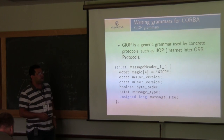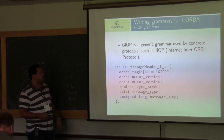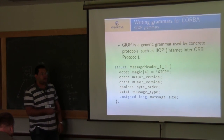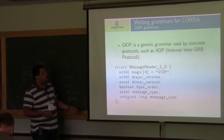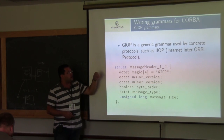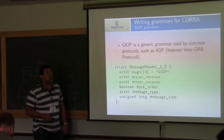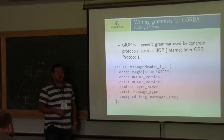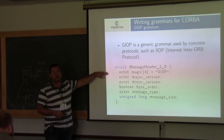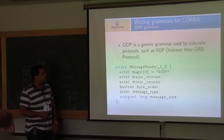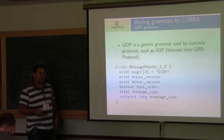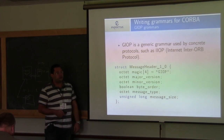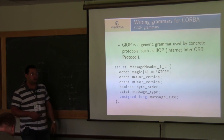GIOP is actually a generic grammar — it doesn't specify directly how an octet is laid out on the stream. There are concrete protocols like IIOP, which stands for Internet Inter-ORB Protocol and uses TCP for communication, which specifies that an octet is actually one byte with eight bits. This is how you send and receive messages for CORBA and communicate with other ORBs.